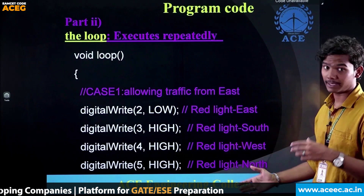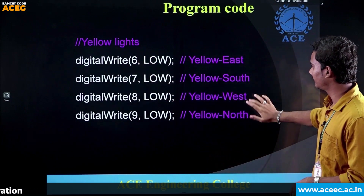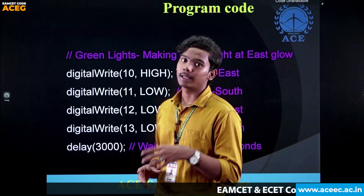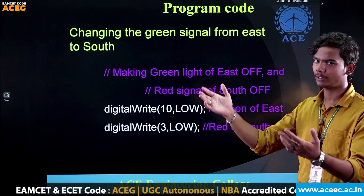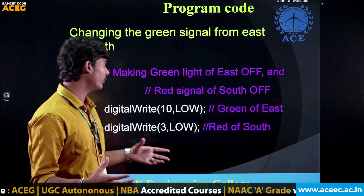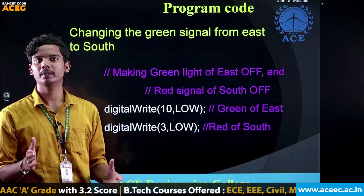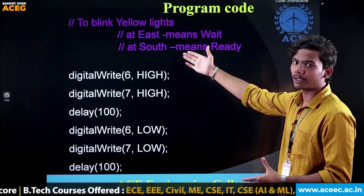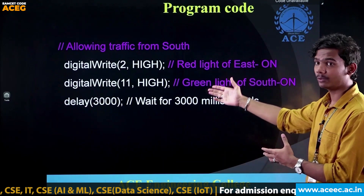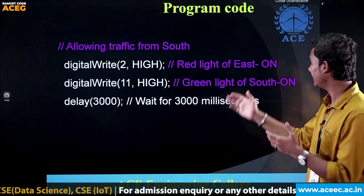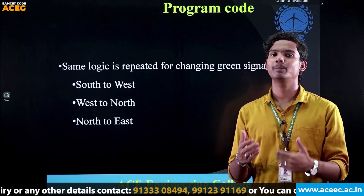This is the code for the red color lights, followed by the code for the yellow color lights. For the green signal, to change it from east to south, the green of east and the red of south must be set HIGH, while others are set LOW (off). The program for blinking yellow allows traffic from the south. To complete the transition, the red light of east is turned on and the green light of south is turned on. The same logic repeats for every direction.